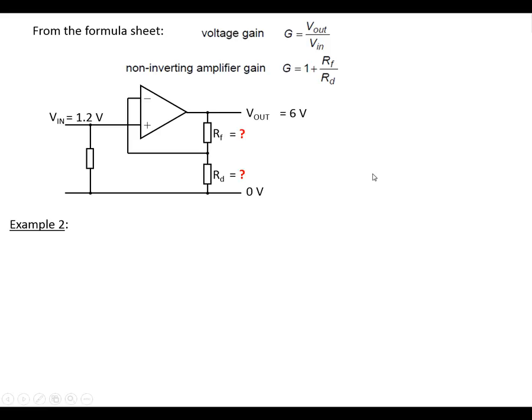Next example would be: we've got V in, we've got V out. So we can work out the gain of this and work out suitable values for the resistors here. So gain is V out over V in, which is 6 volts at the output, 1.2 volts at the input, which gives us a gain of 5.